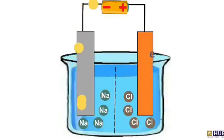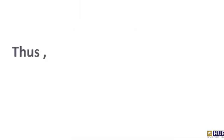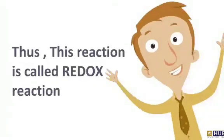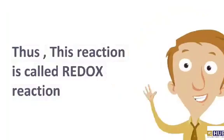Positive sodium is attracted to negative electrode, which is called cathode, and gains more electrons. And this is called reduction reaction. Remember it with red cat. While negative chloride ions are attracted to positive electrode, which is called anode. And this reaction is called oxidation. Remember it with anox. Thus, this reaction is called redox reaction.